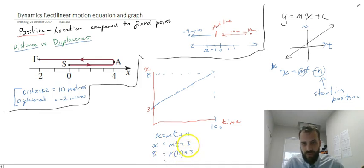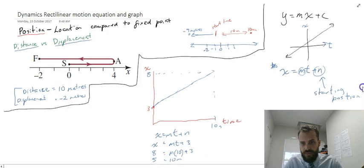8 minus the positive 3 comes over here and becomes 5. 5 equals 10m. That means that you can all figure that out. m equals 5 divided by 10, m equals 1 half. So the actual equation of this journey is x equals 1 half t plus 3.